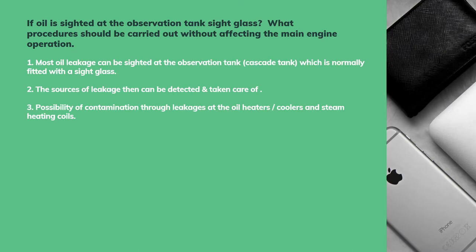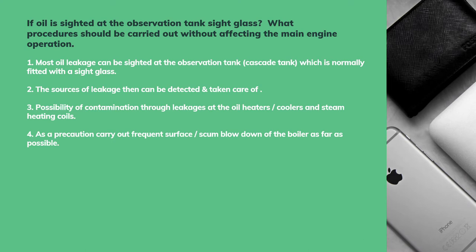The possibility of contamination is through leakages at the oil heaters, coolers, and steam heating coils. As a precaution, carry out frequent surface or scum blowdown of the boiler as far as possible. These leakages can lead to foaming, priming, and carry-over.